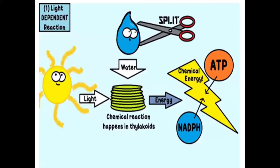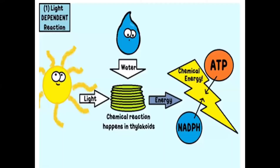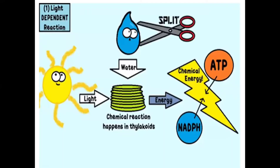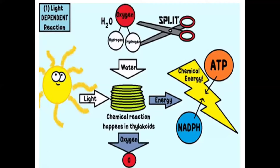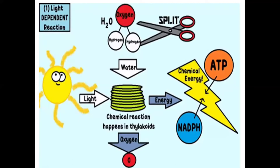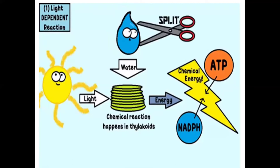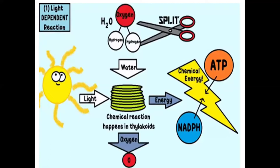Here you can see an animation of light reaction. We have light and water. You can see the water molecule splitting up — that is, breaking down. When it breaks down, it produces hydrogen and oxygen. Oxygen will be released. During light reaction, there is formation of ATP also. The hydrogen is accepted by NADP to form NADPH. This is what happens in the light-dependent phase because it requires sunlight. All these steps take place in the grana of the chloroplast.